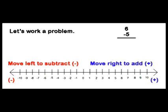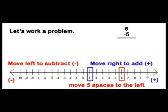Once again we will start with the 6. The minus sign tells us that we have to move five spaces to the left in order to subtract. Once we do that you notice that we land on the number 1 and that's our answer.